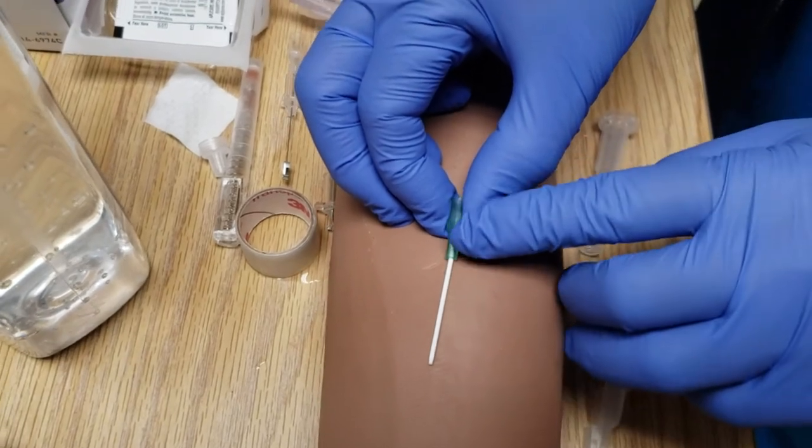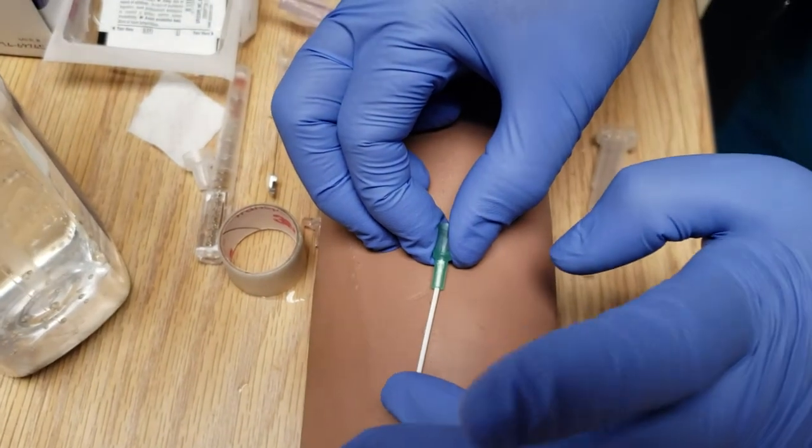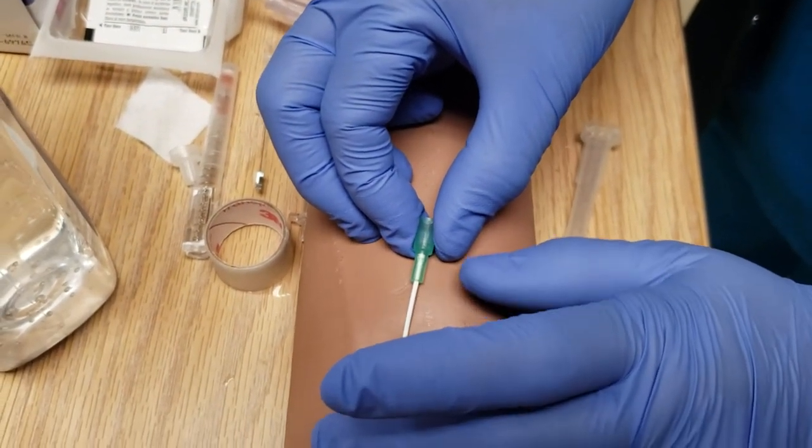What you want to do is put your finger, this finger, at where the tip would be. You want to occlude that. This prevents the blood from backing up into your catheter.